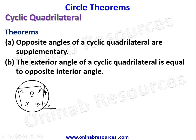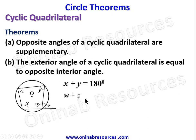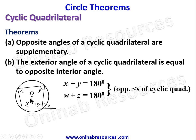To explain the first theorem: in this diagram we have a circle with center O and a quadrilateral with its vertices on the circumference. The angle X is opposite to Y, so X plus Y equals 180 degrees. Similarly, Z is opposite to W, so W plus Z equals 180 degrees. These are the opposite angles of the cyclic quadrilateral.